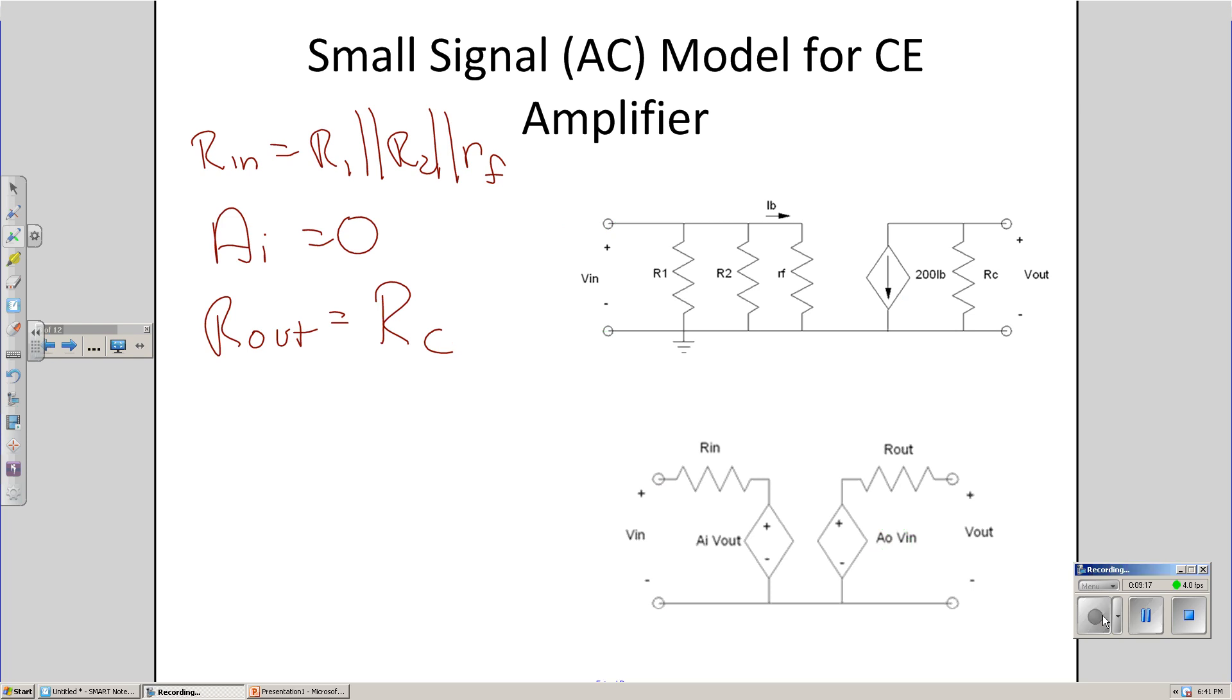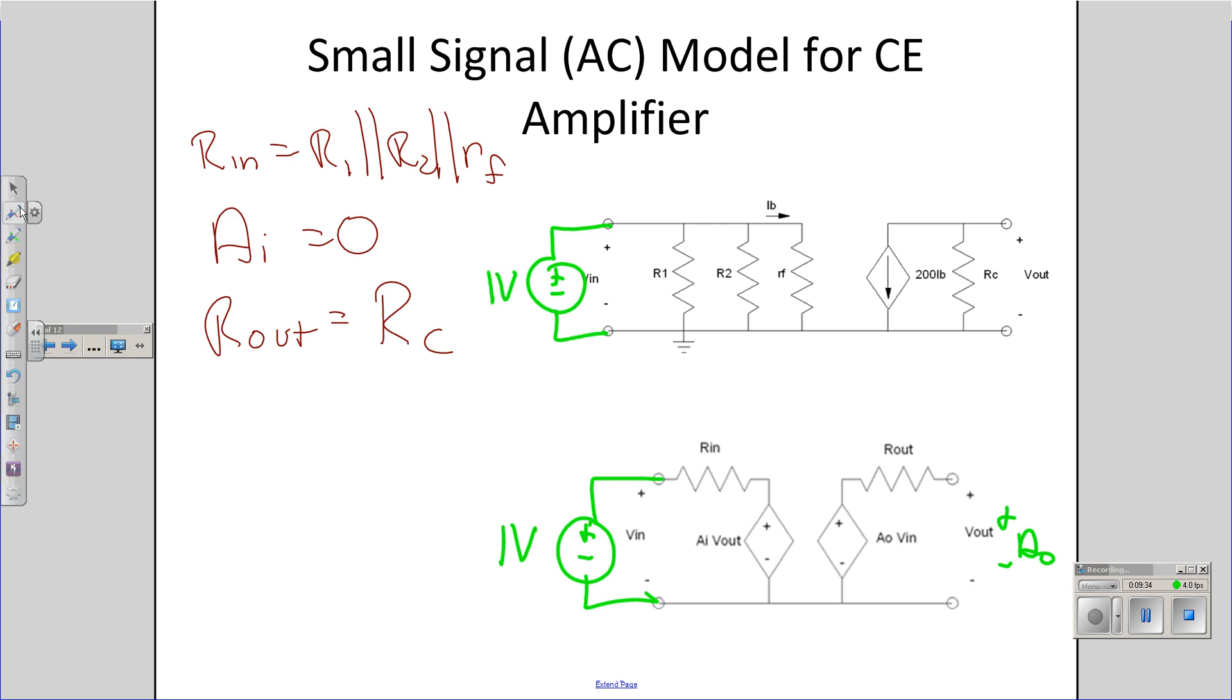Last test, let's find Aout. To find Aout, let's apply one volt at the input. After the output voltage, I'm going to get Aout. Do the same over here. Let's make this one volt. And let's see what I get. If this is one volt, IB is one over Rf. This current is 200 over Rf. This voltage is actually backwards. Backwards gives you minus sign. Minus RC times beta over Rf. That's your two-port model.